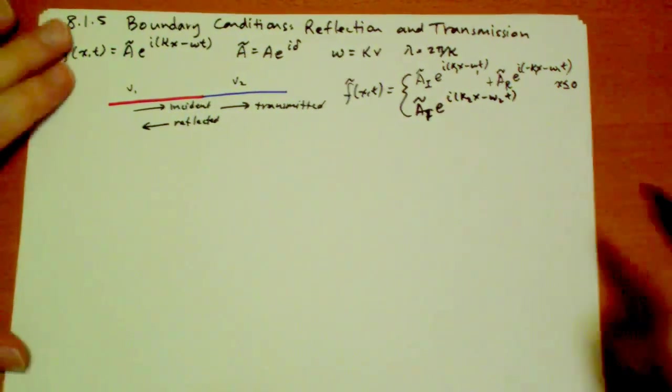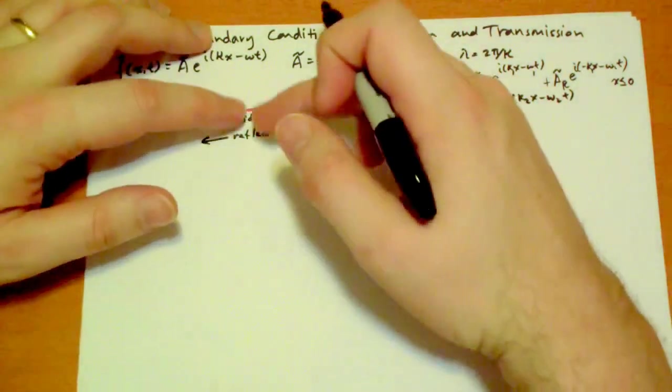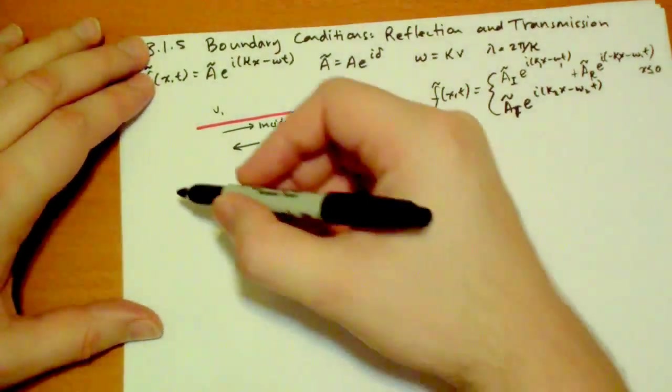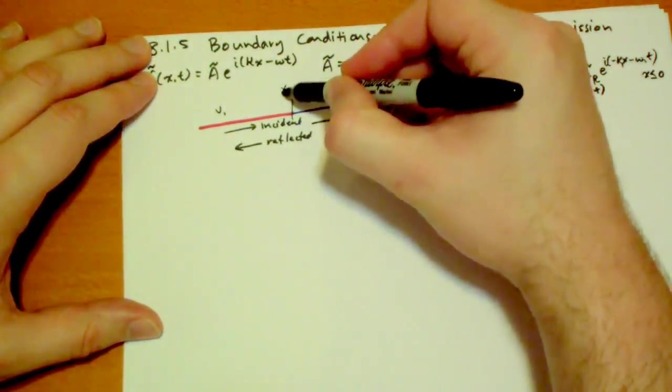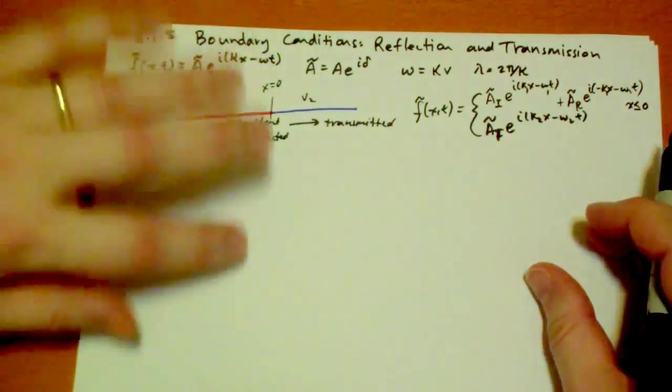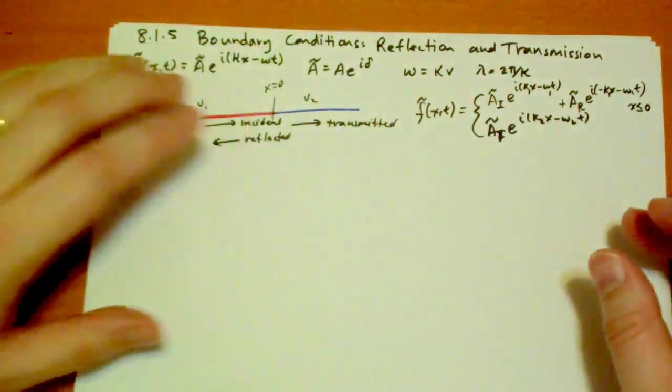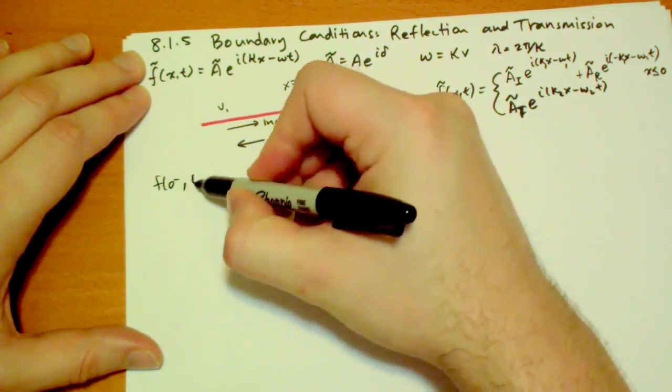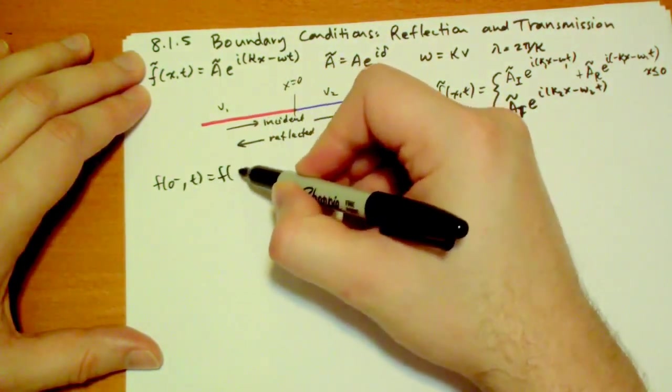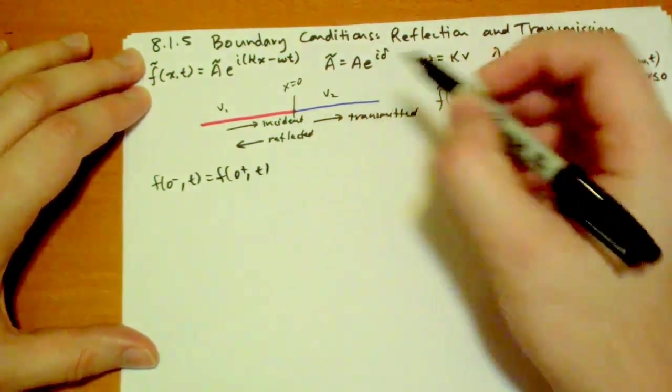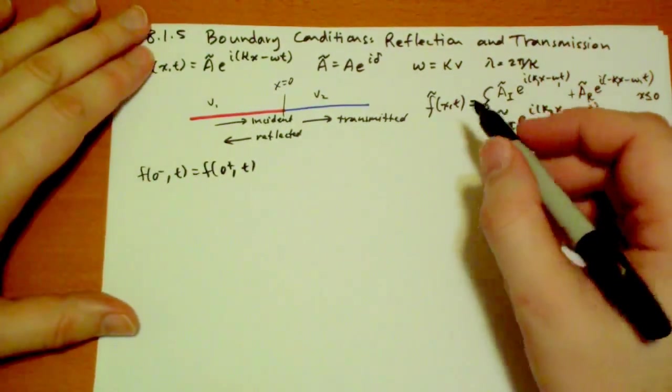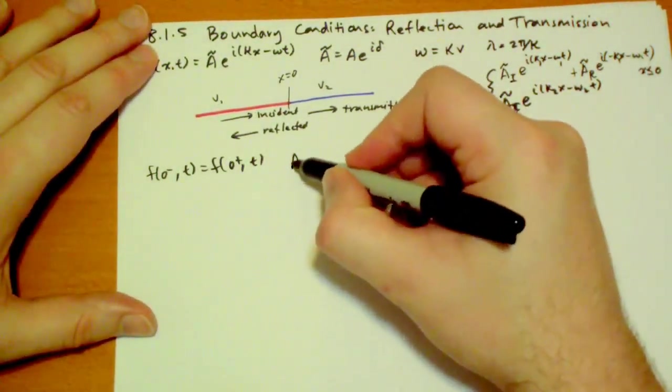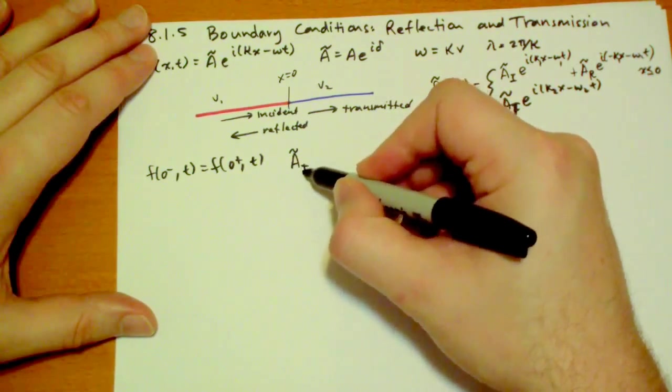Now, we can write down the constraints. Obviously, the first constraint is that these two strings are connected. So at that point, x equals 0, we're going to have these two sides of the function have to match up. So we're going to have f on the 0 side has to equal f on the positive side. f on the negative side has to equal f on the positive side.